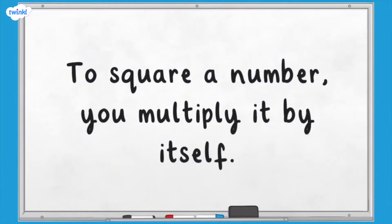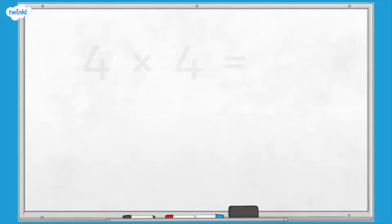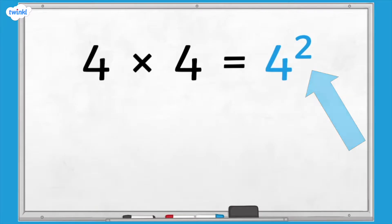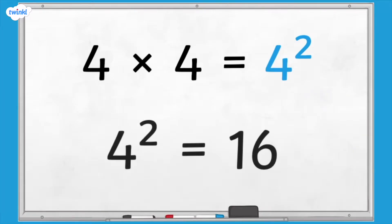When we multiply a number by itself, we can also say that we square it. 4 times 4 is 4 squared. We use this mathematical notation when squaring numbers. We could write our original number statement as 4 squared equals 16.